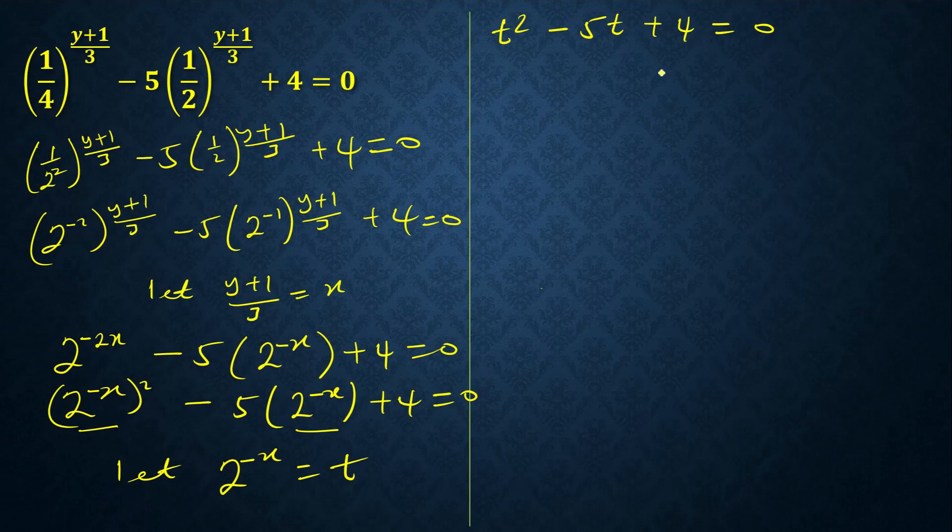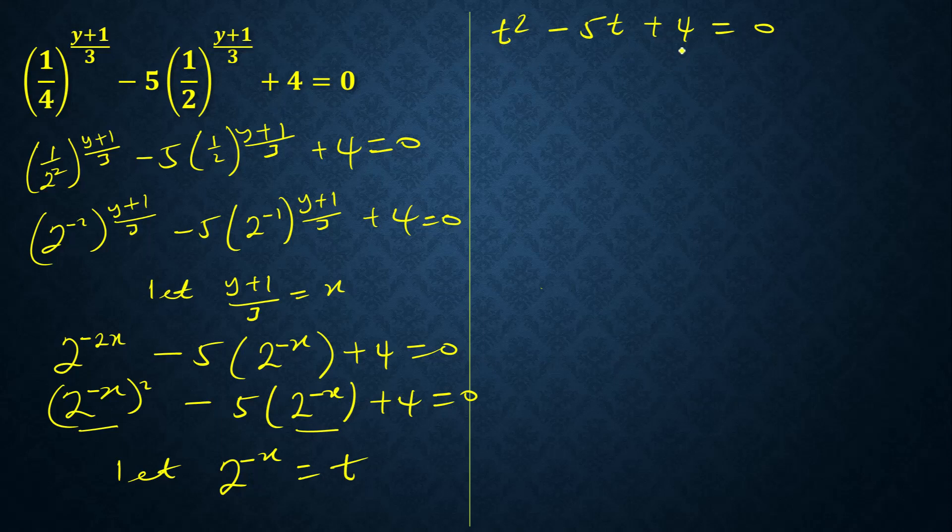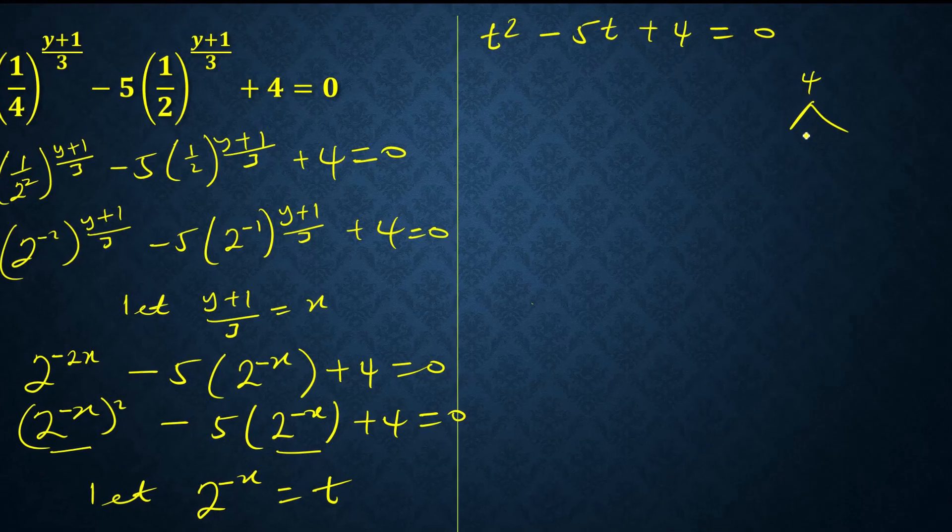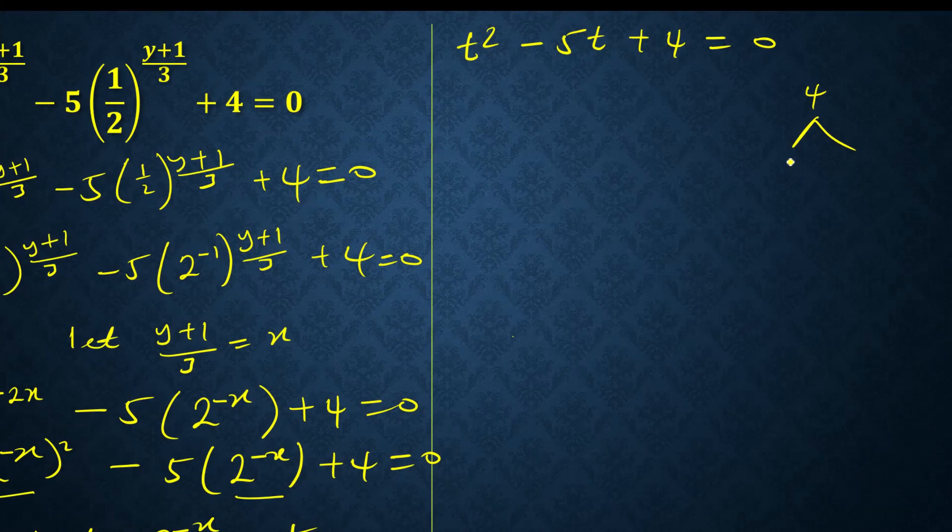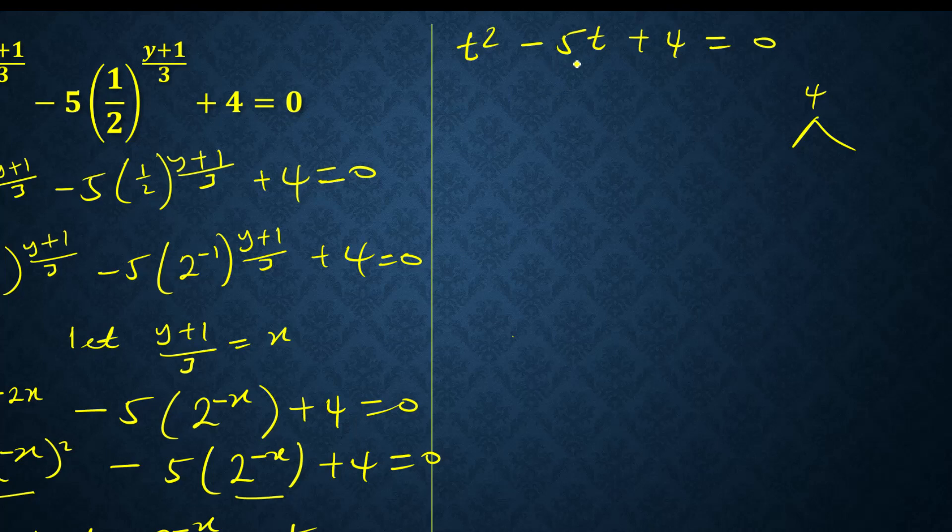Let's look at the factorization method. The coefficient is 1, 1 times 4 is 4. Let's find two numbers when we multiply them to give us 4, but when we add them to give us the coefficient of t. So 4 times 1 is 4, but this side is minus 5.